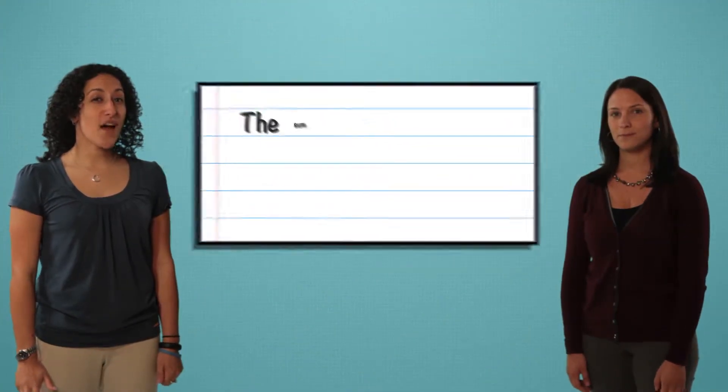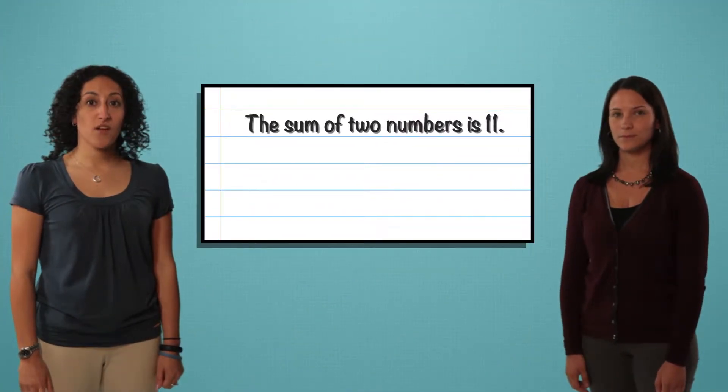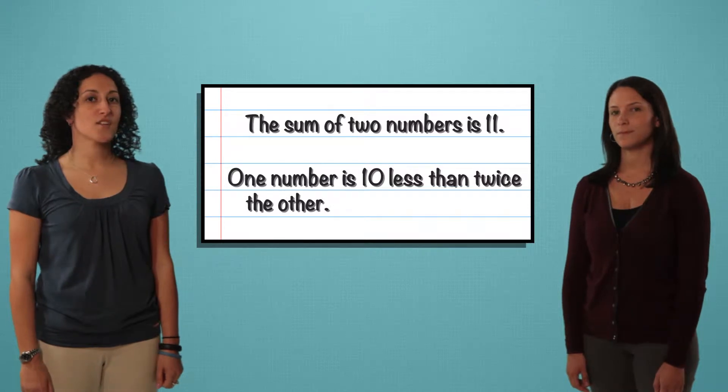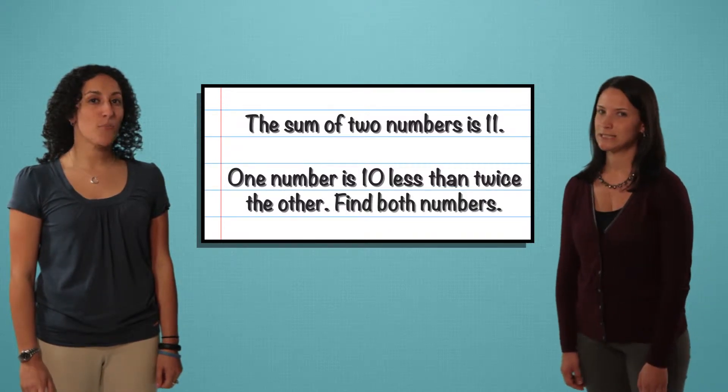This is our word problem. The sum of two numbers is 11. One number is 10 less than twice the other. Find both numbers.